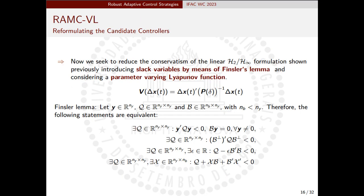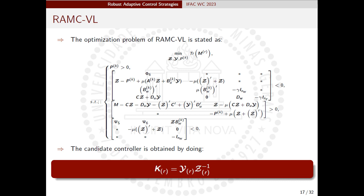The less conservative formulation of the linear robust mixed H2/H-infinity candidate controllers is proposed by considering a parameter-dependent Lyapunov function and introducing slack variables by means of the Counselor's lemma. This approach, considering a parameter-dependent Lyapunov function, results in a different set of LMIs that are included into the optimization problem. Note that now the candidate controller feedback gain is computed considering the slack variable instead of the Lyapunov variable.